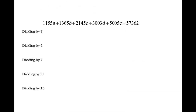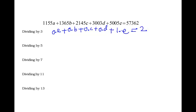All these numbers follow a very peculiar property: they are all divisible by the first five odd prime numbers. If I divide by 3, the number 1155 gives a remainder of 0; the second, third, and fourth numbers also give a remainder of 0 with 3. But 5005 gives a remainder of 1 with 3, giving us 1 × e. The total 57,362 gives remainder 2 when divided by 3. So the equation becomes 1 × e = 2, meaning the value of e is 2.